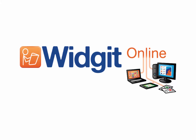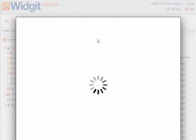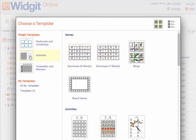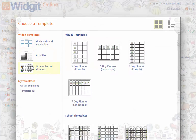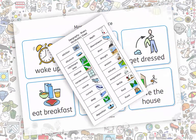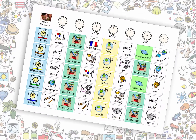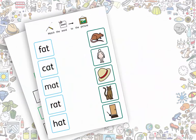New Widget Online! Create symbol resources in your browser. With over 70 grid templates, create flashcards, vocabulary sheets, timetables, and a whole range of activities.